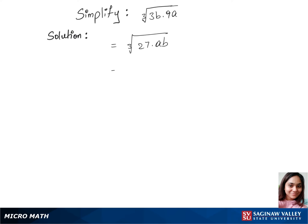In our next step, we have, let's separate the cubic root and write this as cubic root of 27 times cubic root of AB. And 27 is a 3 cube, so we can write cubic root of 3 power 3 times cubic root of AB.